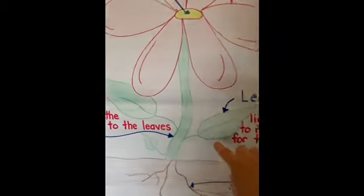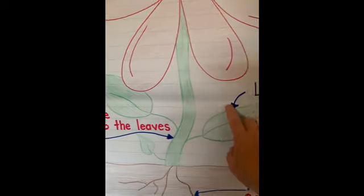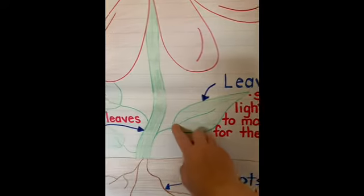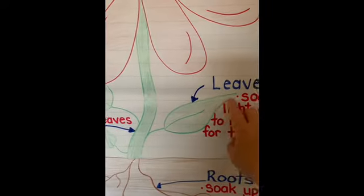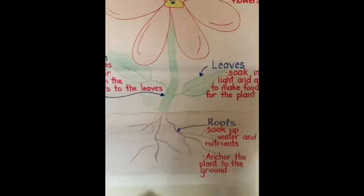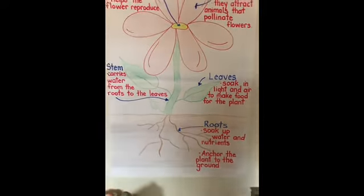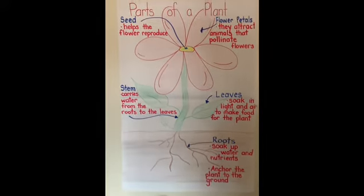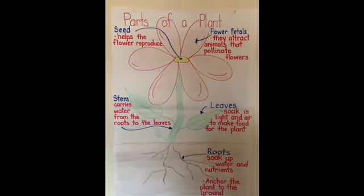Next we have our leaves. The job of the leaf is to soak in the light and the air and to make food for the plant.